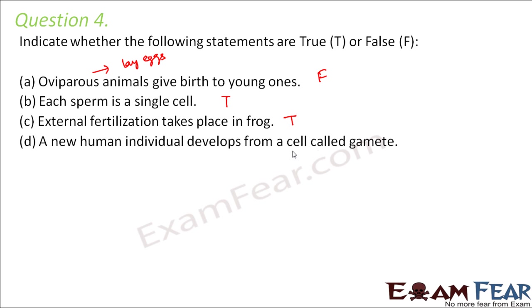A new human individual develops from a single cell gamete — that is not true. The new individual doesn't develop from a gamete. A gamete is a sex cell — either a sperm or an ovum. A sperm alone cannot develop into a new individual, nor can an ovum alone. Only a zygote can develop into a new individual, and a zygote is formed when a sperm and an ovum fuse together. So it should be a single-celled zygote, not a gamete.